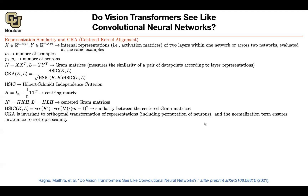CKA has some nice properties. If you permute your neurons — permute these vectors — you end up with the same CKA score. If you multiply X by a scalar, the number is invariant to that scaling. So CKA has good properties as a metric, and that's what we're going to use to compare a transformer to a CNN.